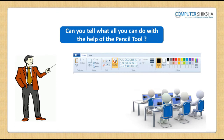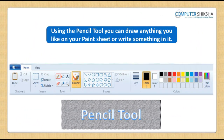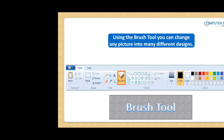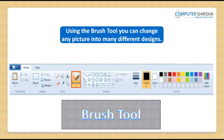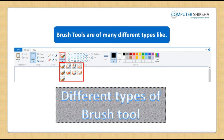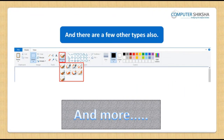Can you tell what all you can do with the help of the pencil tool? Using the pencil tool, you can draw anything you like on your paint sheet or write something in it. Can you tell what is the brush tool? Using the brush tool, you can change any picture into many different designs. Can you tell how many types of brush tools are there? Brush tools are of many different types like airbrush, calligraphy, oil brush, and there are a few other types also.